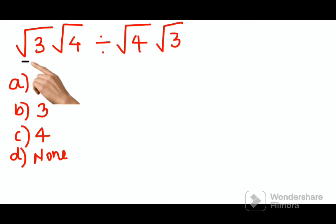So here what we have is root 3 into root 4 divided by root 4 into root 3. So first we will go with our word BODMAS.